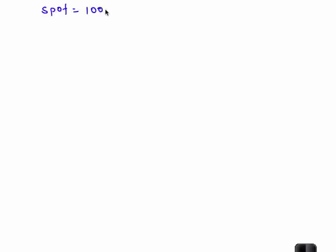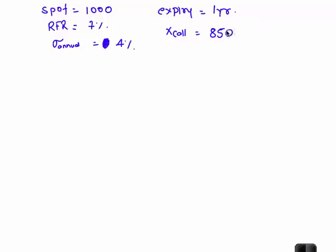Are we clear with this? So let's do an example. Let us say spot is 1000, risk free rate of return, assume continuous, 7% annualized volatility 4%. Expiry 1 year. Strike price of the call option 850. Find out value of this call option using Black Scholes and Merton model.